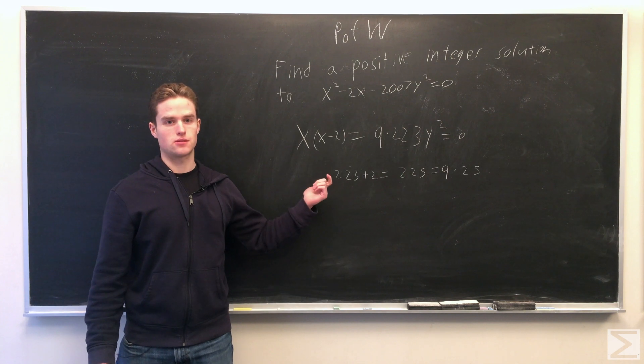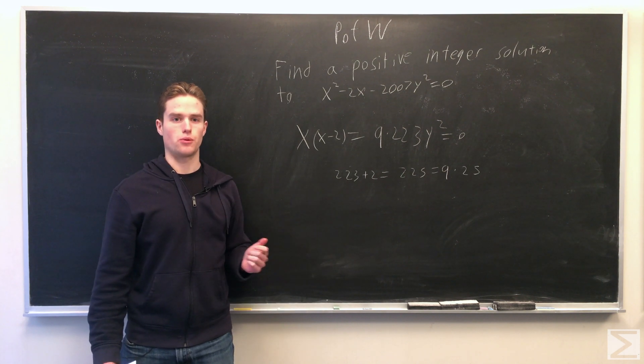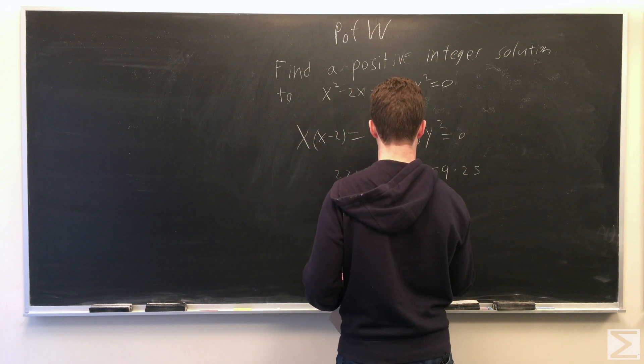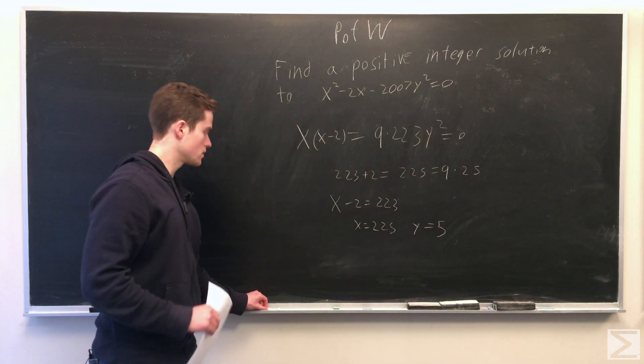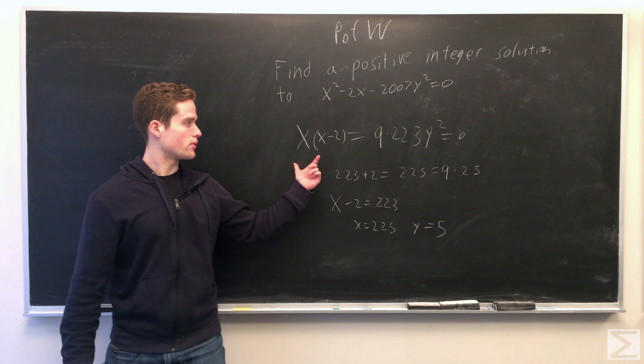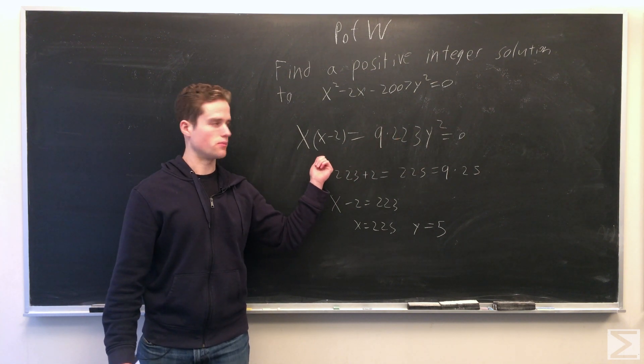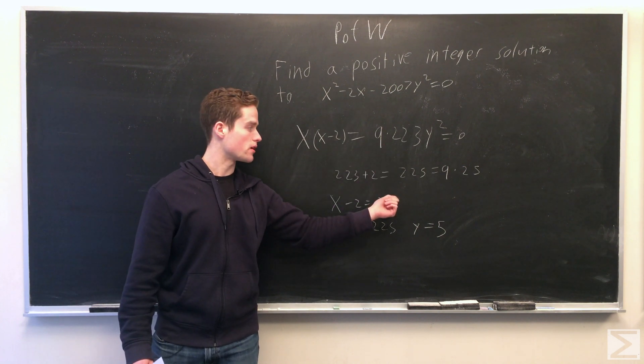So note this quickly gives us just one solution, which is all we want. Just by writing this equation in this form and looking for different possibilities for what a positive integer solution might look like, we try 223.